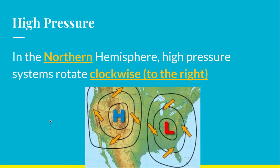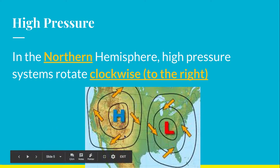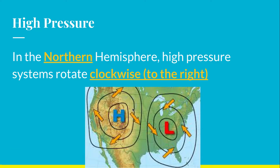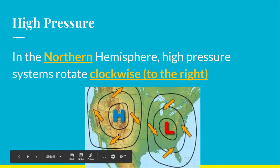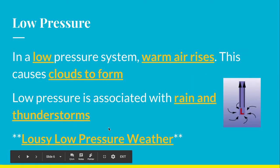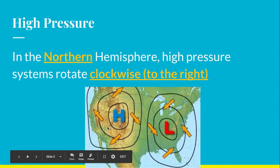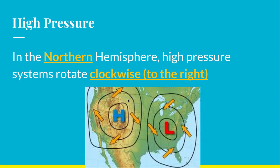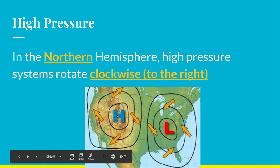In the northern hemisphere, high pressure systems are going to rotate or turn clockwise. So clockwise would be this way — think about a clock, the hands of the clock go like this. So clockwise equals high pressure, air sinks, clear sunny skies.